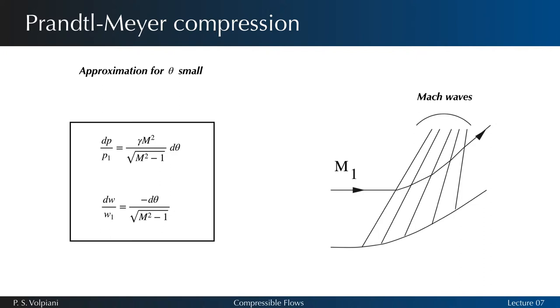The transition to the limit delta theta towards zero is reflected in the speed variation by the following differential expression. In these formulas, m denotes the local Mach number upstream of the Mach line considered and d theta the infinitesimal deflection through this Mach line.